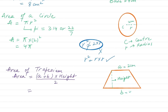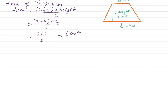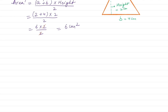Assume A is 2, B is 4, and height is 2 centimeters. Putting all values into the formula: 2 plus 4, times height 2, divided by 2. We know 2 plus 4 is 6, times 2, divided by 2. You can cancel 2 with 2, or multiply 6 times 2 and divide by 2 — both give the same answer, which is 6 centimeters squared. Remember, centimeter squared is very important as the unit.